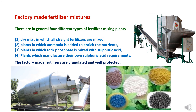The second type is factory-made fertilizer mixtures, with four different types of mixing plants: first, dry mix plants where all straight fertilizers are mixed; second, plants where ammonia is added to enrich nutrients; third, plants where rock phosphate is mixed with sulfuric acid; and fourth, plants which manufacture their own sulfuric acid requirements to add to the fertilizers. Factory-made fertilizers are granulated and well protected.